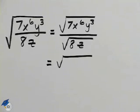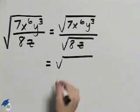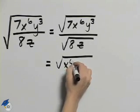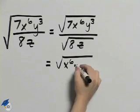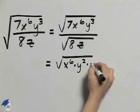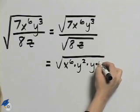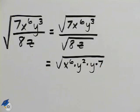So in the top, 7 is not a perfect square. x to the sixth is, y cubed is y squared times y. And I'll place this 7 on the end because it's a non-perfect square.